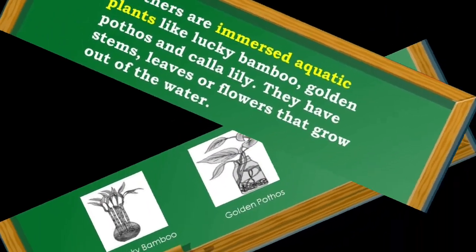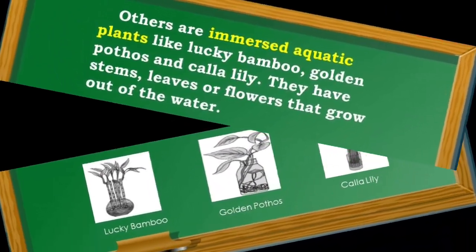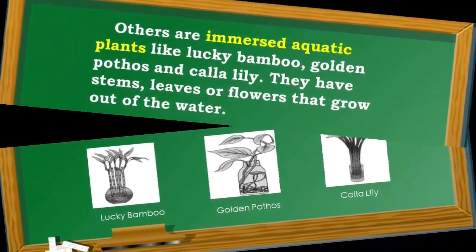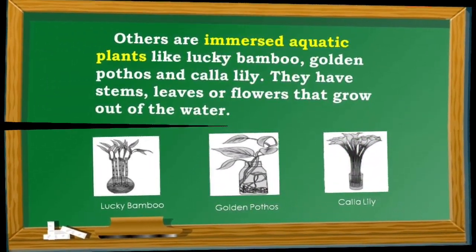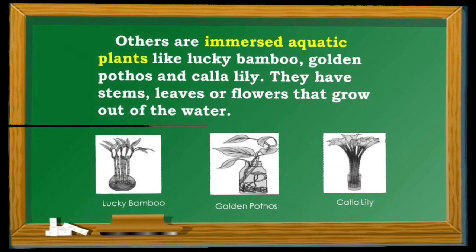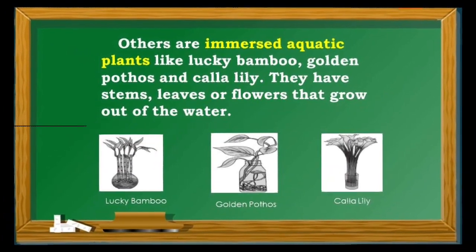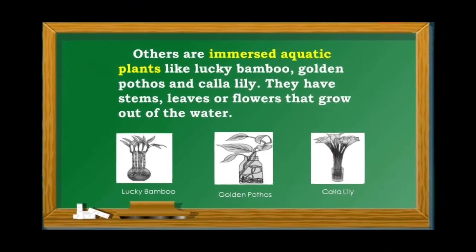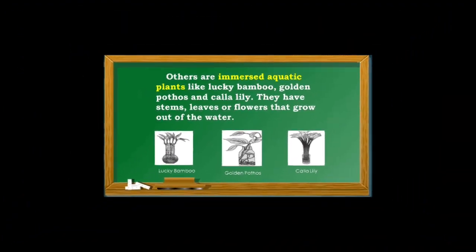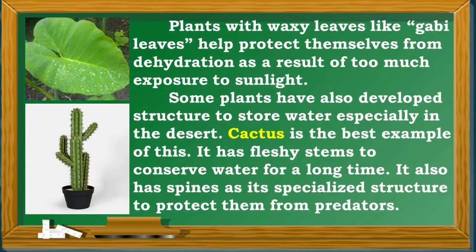Others are emergent aquatic plants like lucky bamboo, golden pothos, and calla lily. They have stems, leaves, or flowers that grow out of the water. Plants with waxy leaves like gabi leaves help protect themselves from dehydration as a result of too much exposure to sunlight.